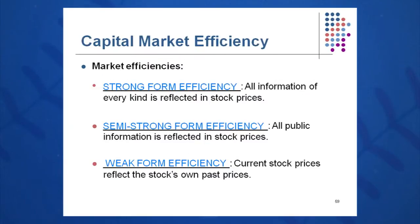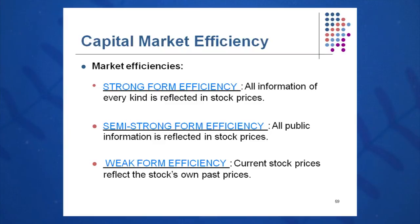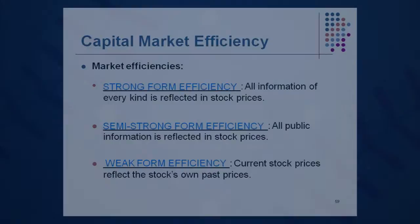You may have three types of capital market efficiency: strong form efficiency, semi-strong, and weak form. Strong form efficiency is where all information of every kind is reflected in stock prices. Semi-strong is where all public information is reflected. And weak form — current stock prices just look at their own past prices.